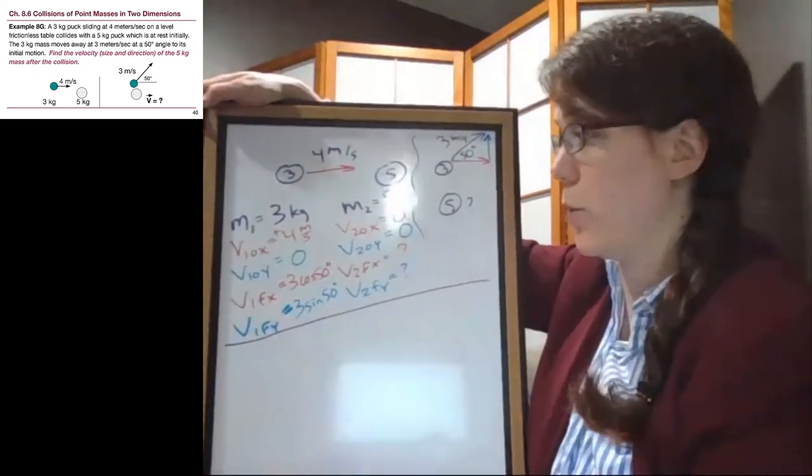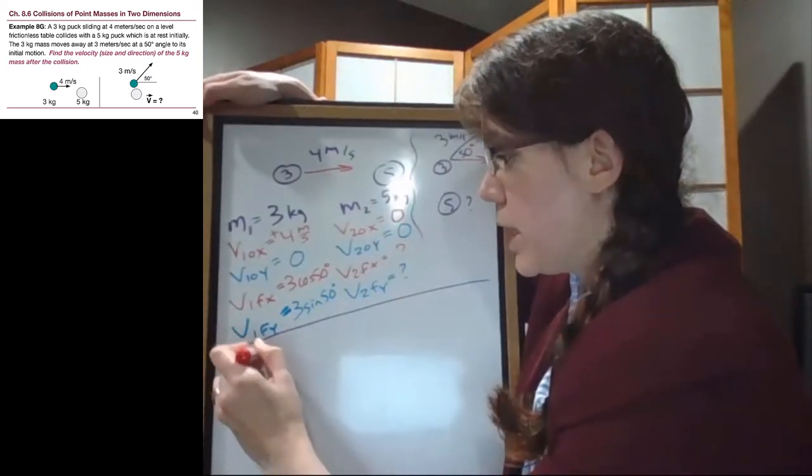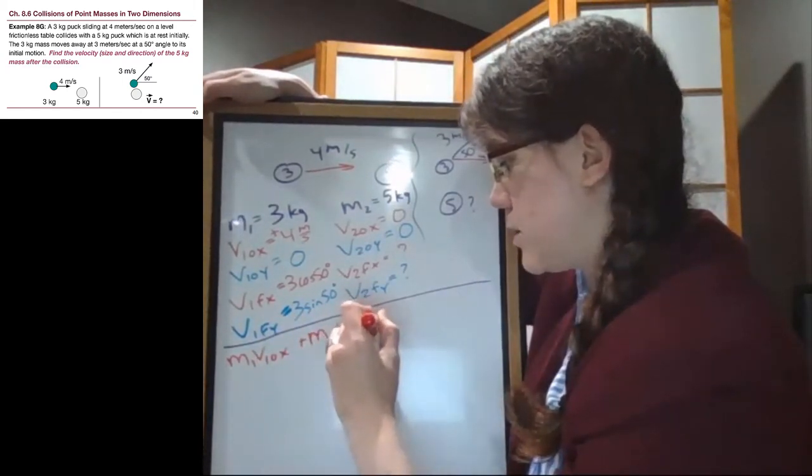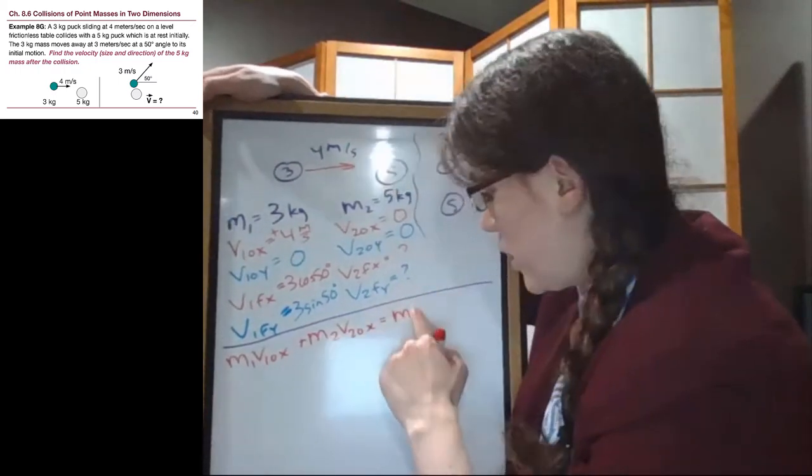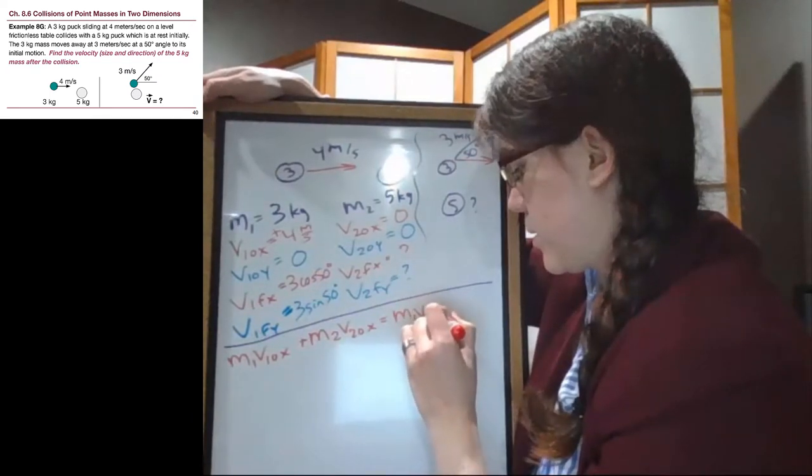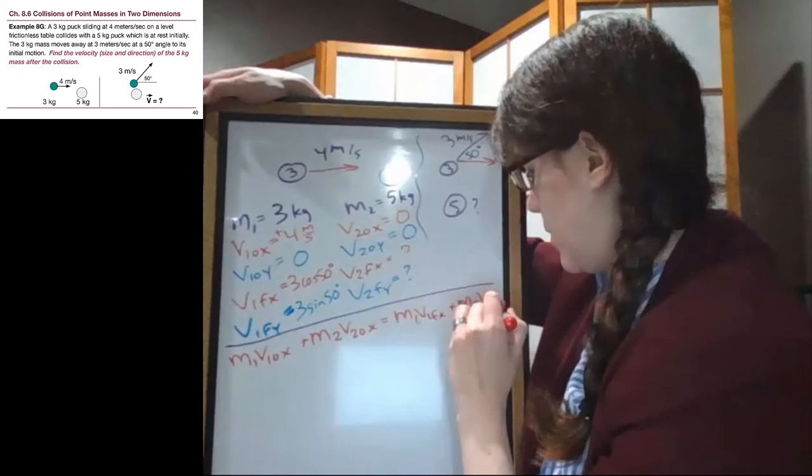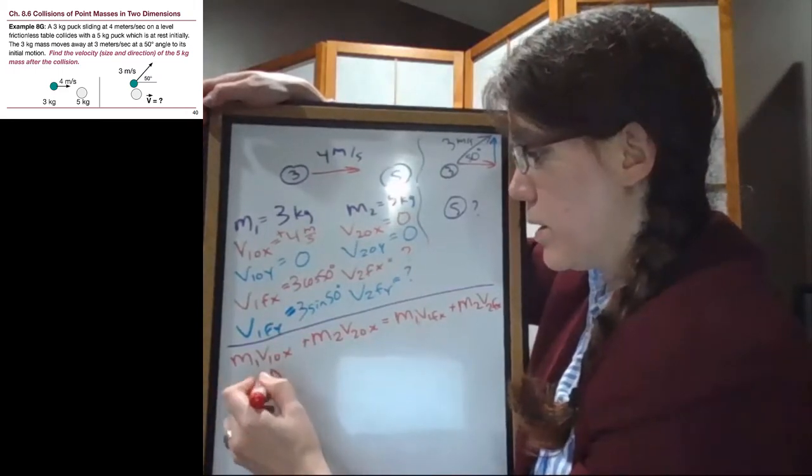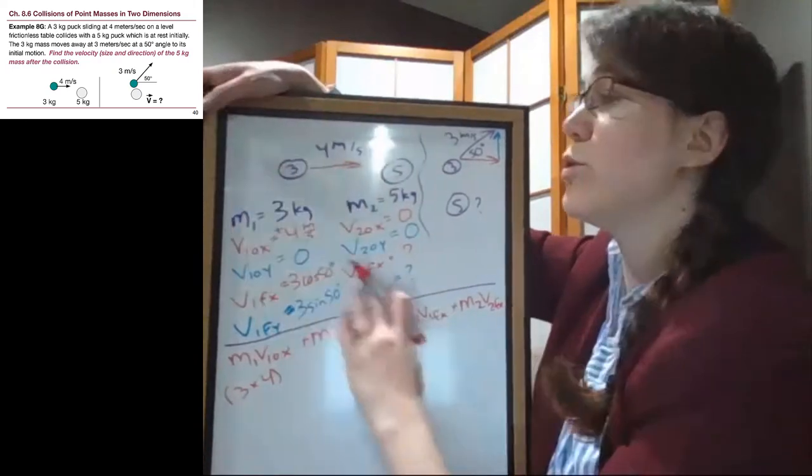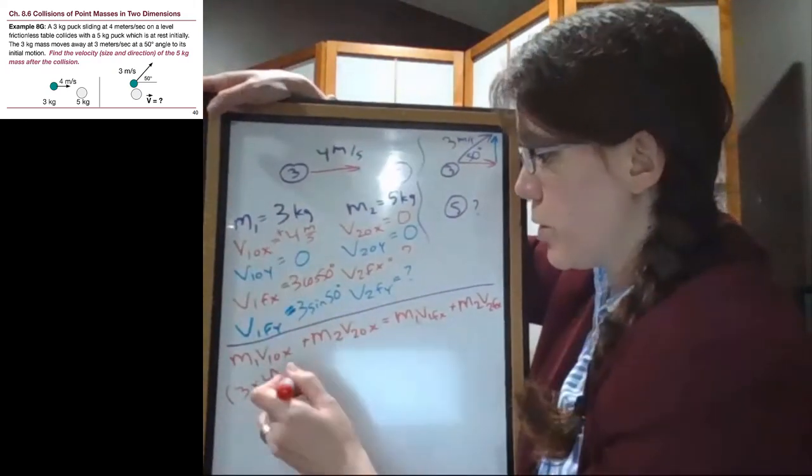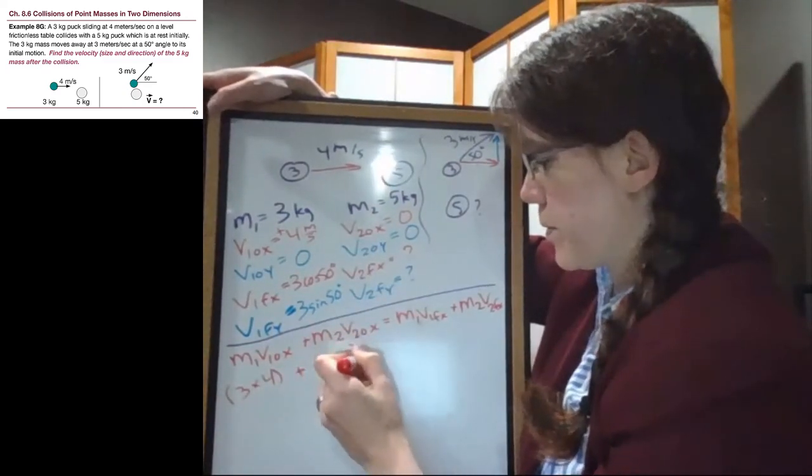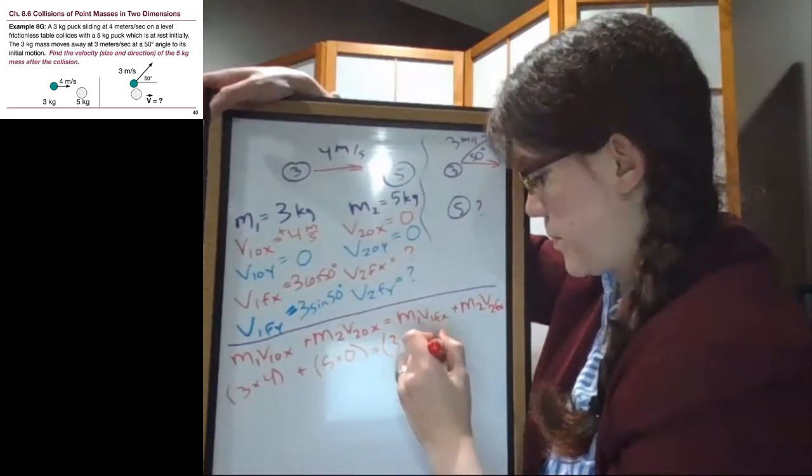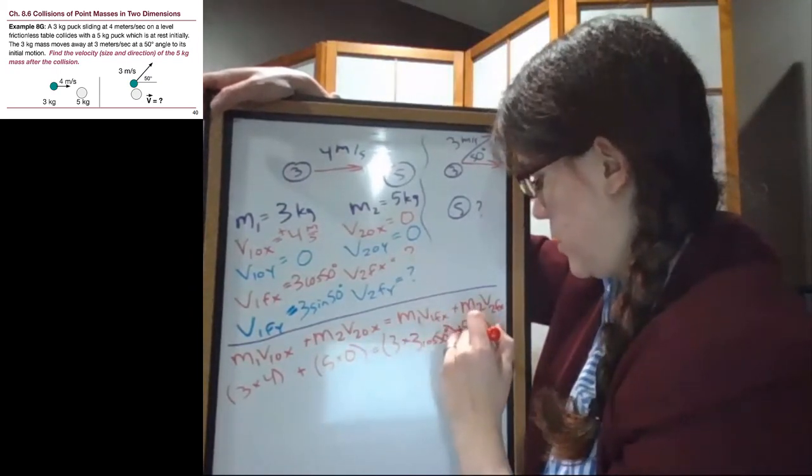There's the x equation, and there's the y equation. So let's write down the x equation. Keep in mind that there are some longer subscripts now, but fundamentally it is the same kind of equation we were working with from the start, where this time we're just looking at the x direction. So we have three times four. The math part here is actually quite small if we do all of the hard work in the setup. So three times four, plus five times zero, equals three times three cosine 50 degrees, plus five v2fx.